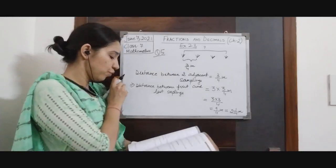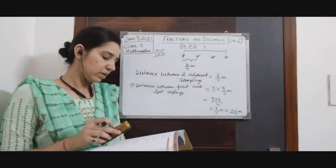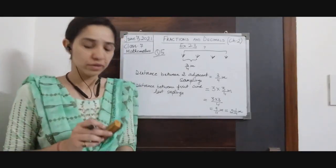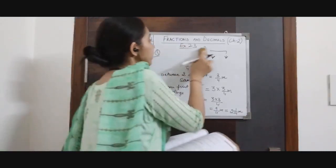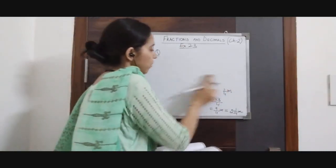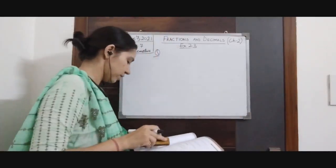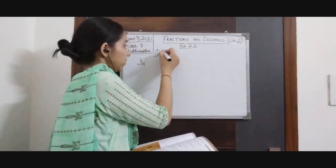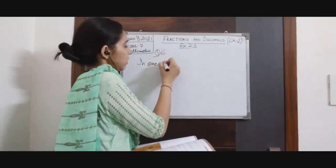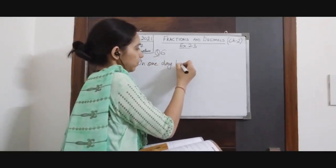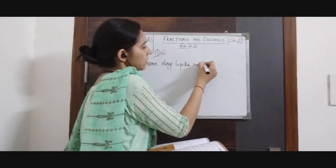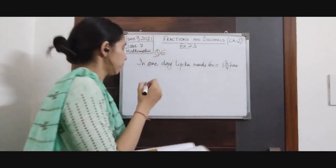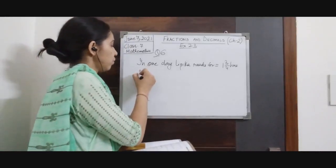Question number 6: Lipika reads a book for 1 and 3/4 hours every day. She reads the entire book in 6 days. How many hours in total were required by her to read the book? In one day Lipika reads for 1 and 3/4 hours.